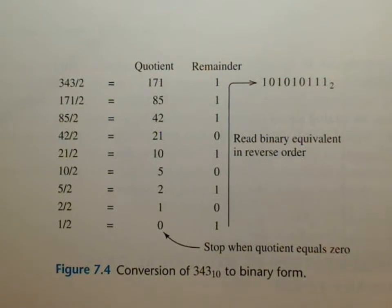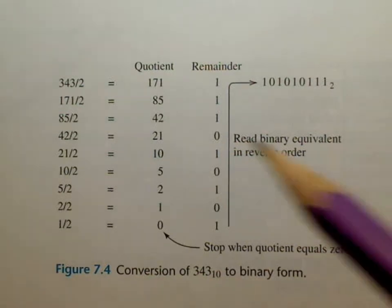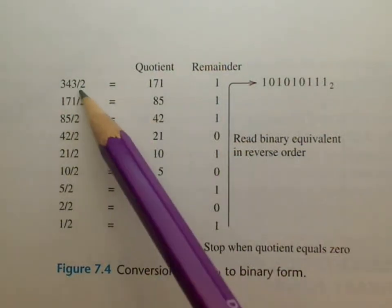All right, this is on page 360 and it's figure 7.4. What we're going to do is convert this decimal number over to binary and what you do is you start off with 343.